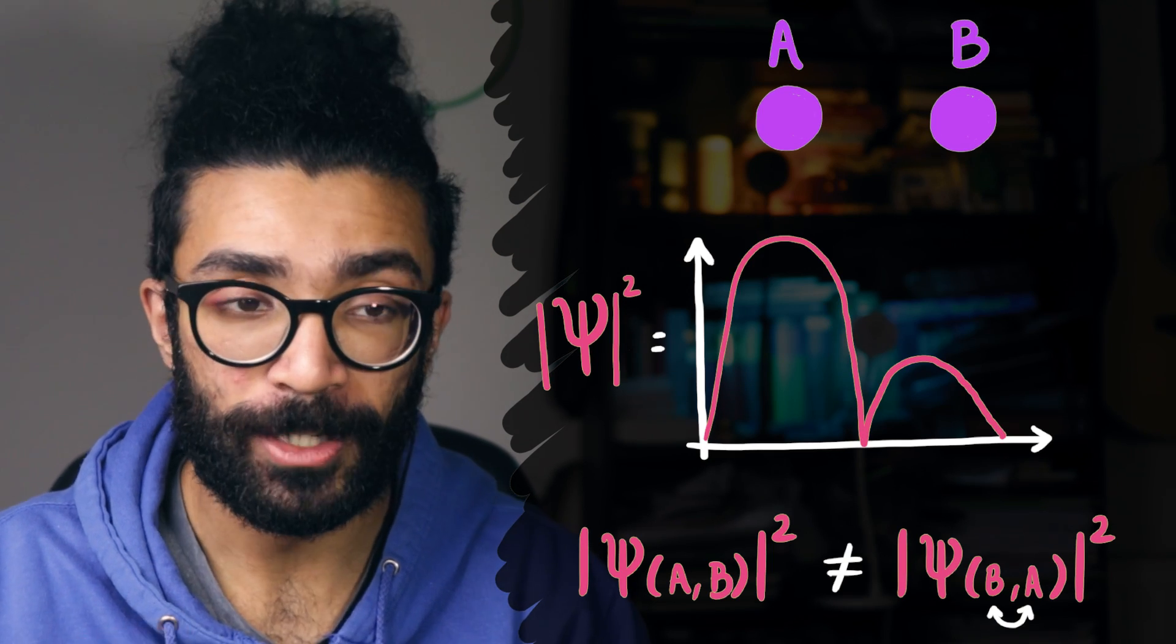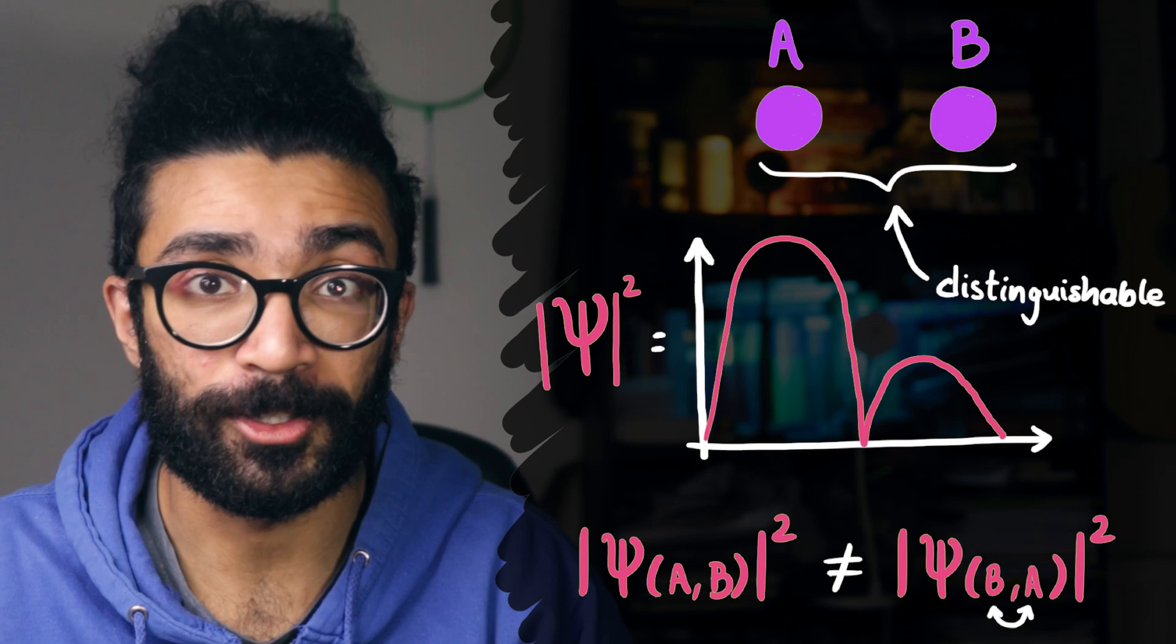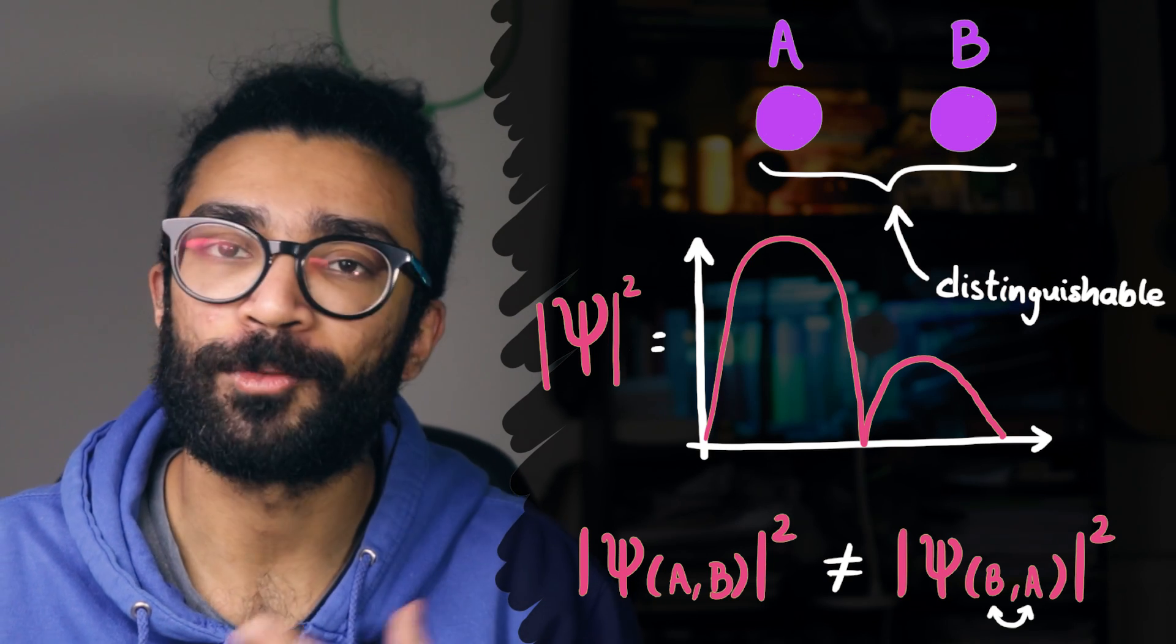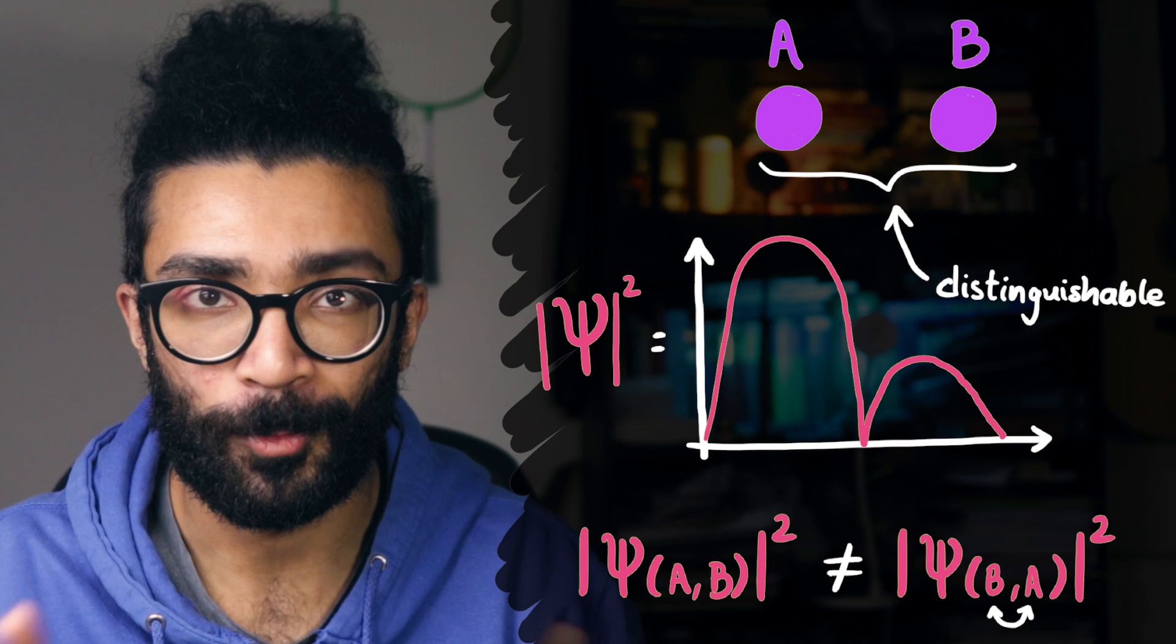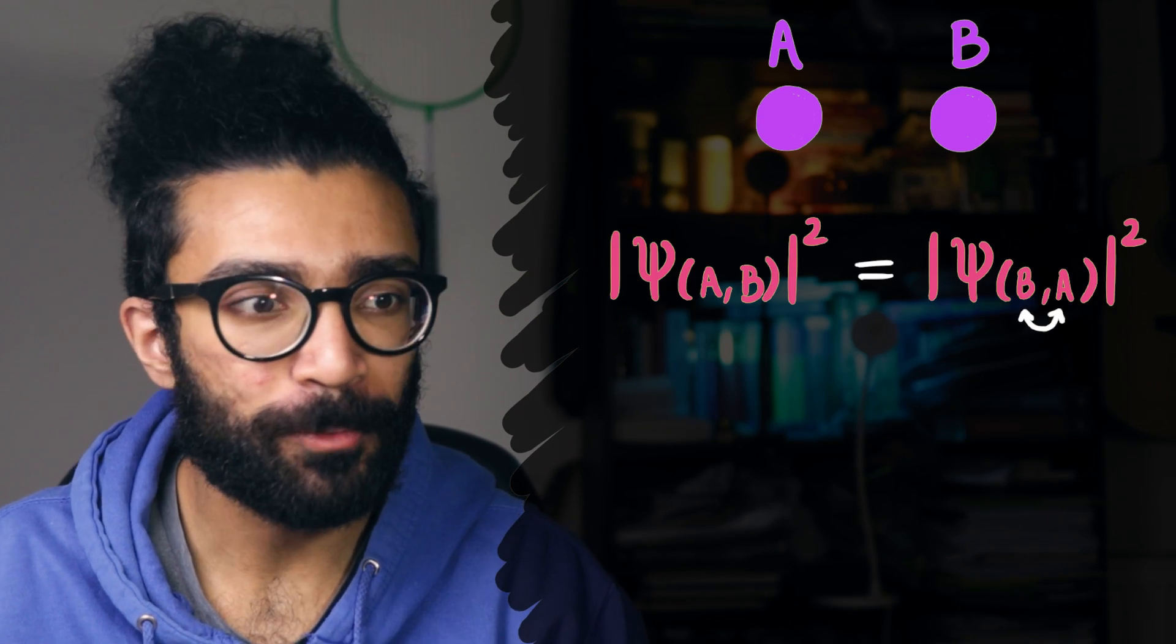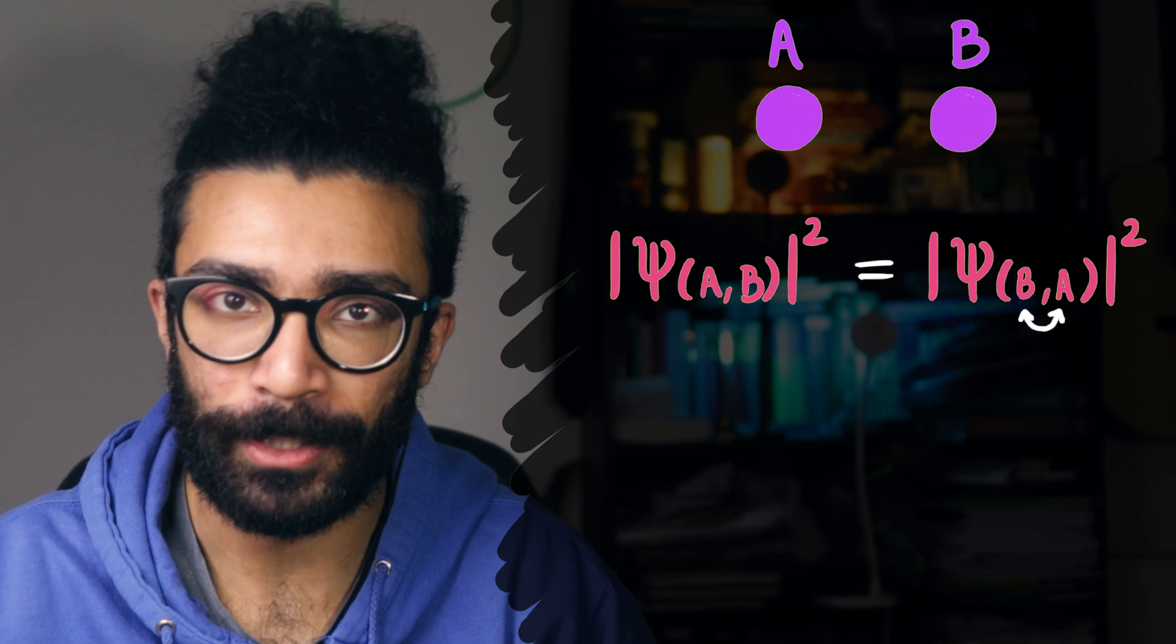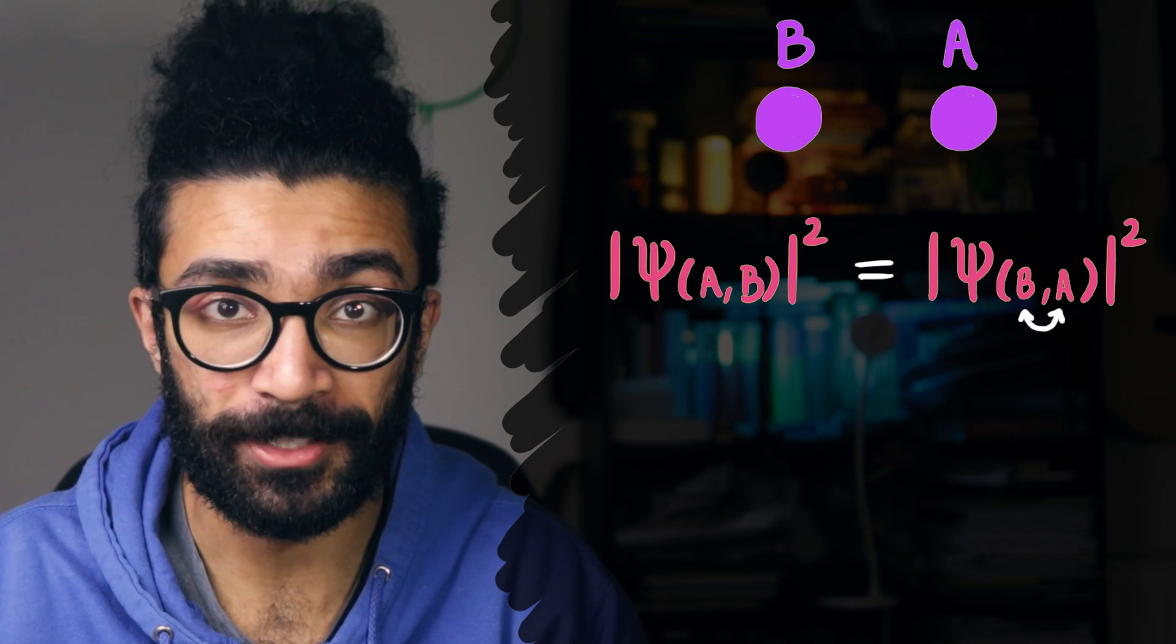Whereas if the wave function changed when we swapped these particles, then we would be able to tell. There would be some experiment that we could do on our system that would tell us which wave function squared we had for that particular system, and therefore which orientation we had our particles. So basically, the square of the wave function when we've got the orientation AB must be the same as the square of the wave function when we've got the orientation BA.